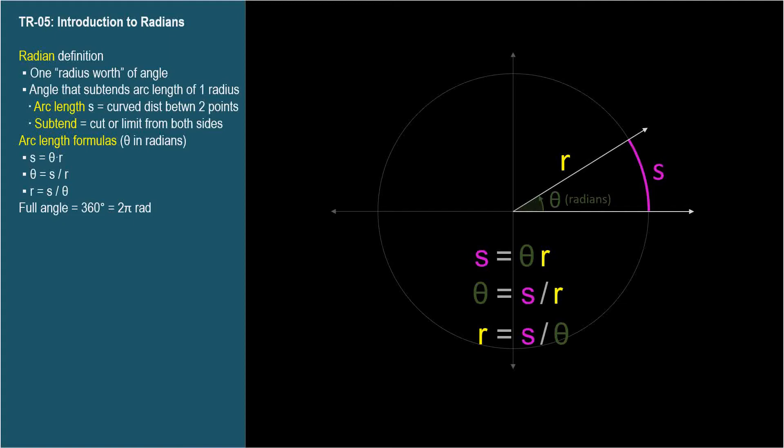Last point. Notice from equation two that theta in radians equals a distance divided by another distance. The units of measure cancel out, and radians is a unit of angle measure which itself is dimensionless, since it's the length of the subtended arc divided by the length of the radius. It's just a number, the number of radii in an arc length.